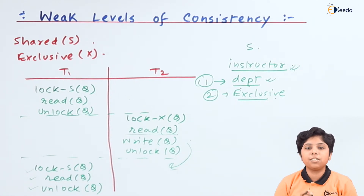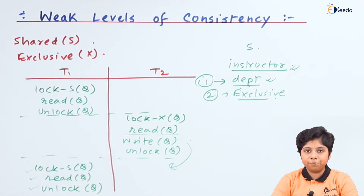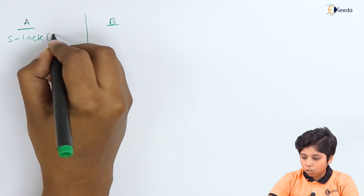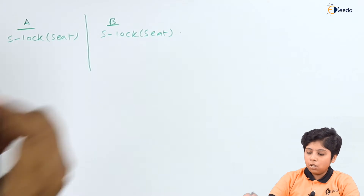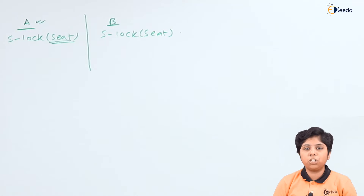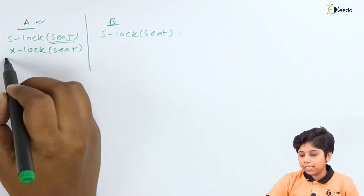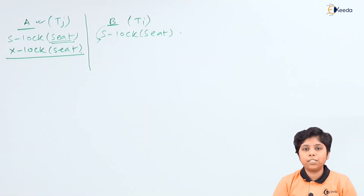The next issue is concurrency control with user interaction. Consider an airline reservation system where user A and user B are both accessing the same flight at the same time. Both acquire a shared lock on the seat data. When user A selects a particular seat, it upgrades to an exclusive lock on that seat data item. While this exclusive lock is held by A, user B can no longer hold the shared lock and is forced to abort its transaction.